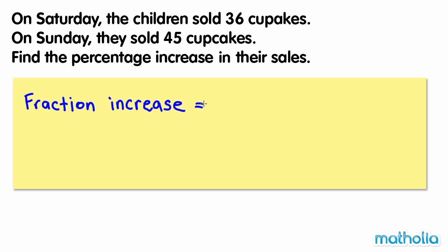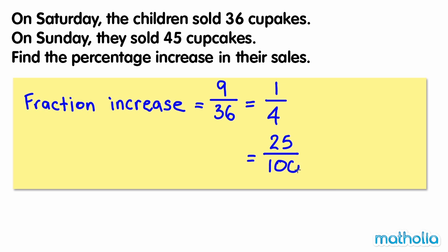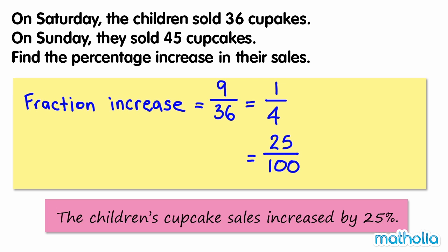The fraction increase in sales is equal to the increase in sale amount over the original sale amount. 9 over 36 equals 1 quarter. Multiplying both numbers by 25 gives 25 over 100. 25 one hundredths equals 25%. So the children's cupcake sales increased by 25%.